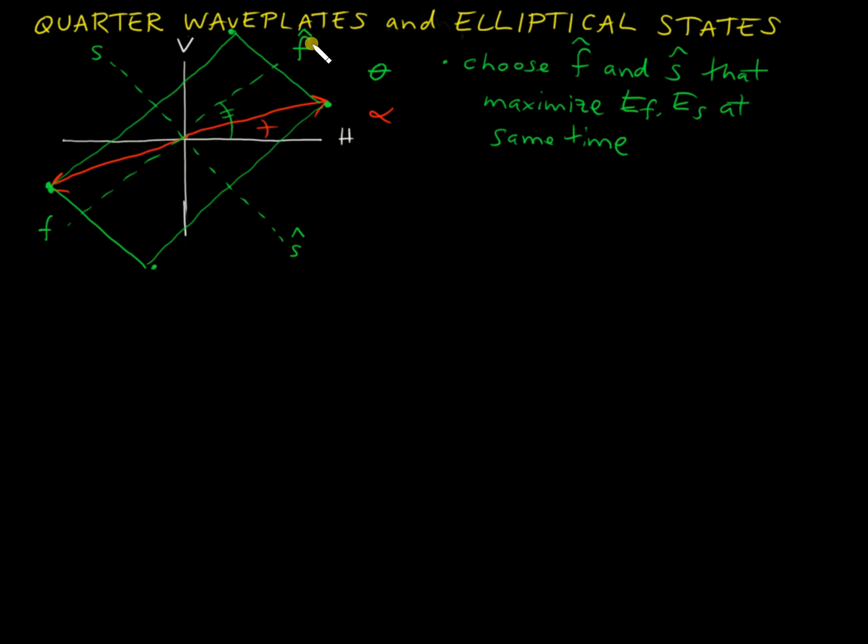So now we can say that after the state passes through the waveplate, the output state, by definition of a quarter waveplate, we're now instead of E_F and E_S maximizing at the same time, we're going to have E_F leads E_S by a quarter cycle, by pi over 2.